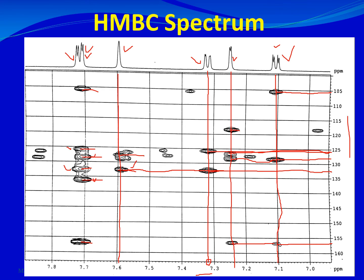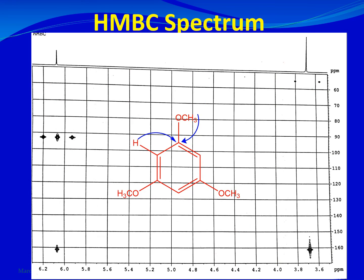This is how we read the HMBC spectrum and form smaller structural fragments. For example, a proton can show HMBC correlation with carbons that are two or three bonds away, while a one-bond correlation with a directly attached carbon would be seen in the HSQC spectrum instead. Here is an example using a trisubstituted benzene ring molecule.